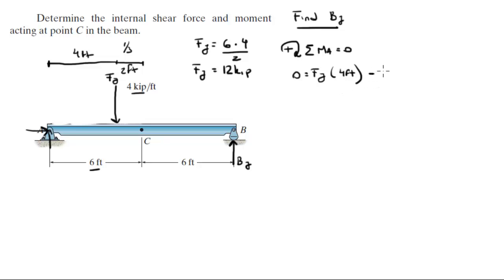Minus BY times 12, because the whole length of the assembly is 6 plus 6 which is 12, the distance of BY from A. So those are the moments, and when you solve for BY you get that BY is equal to 4 kilopounds, because we already have FY, we calculated it right here, just plug it in, solve for BY, and you get that BY is equal to 4 kilopounds.